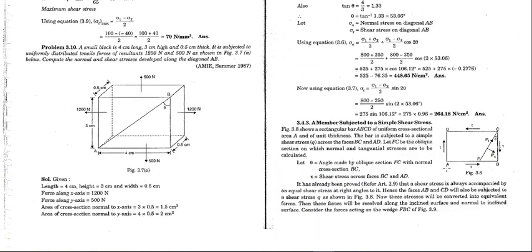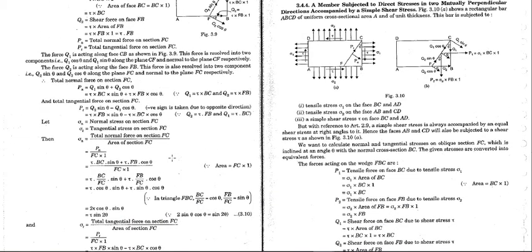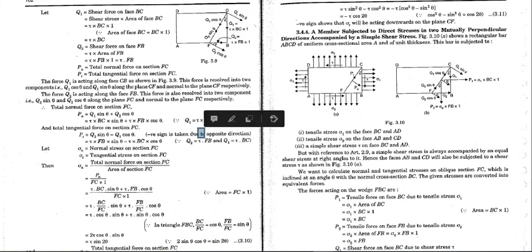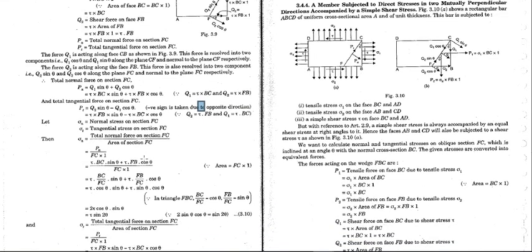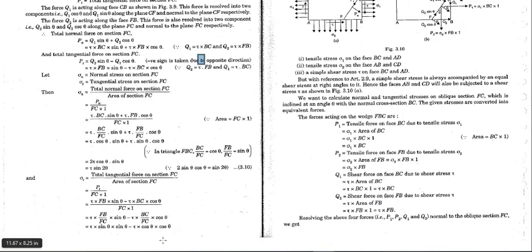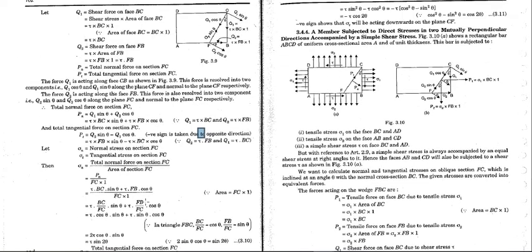The next case is when only shear stress is acting and no normal component is present on the plane. Again we consider the oblique plane at angle θ, resolve the forces in the normal and tangential directions, and obtain: the normal stress equals τ sin 2θ, and the tangential stress equals −τ cos 2θ.